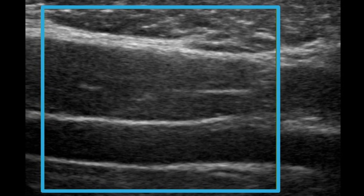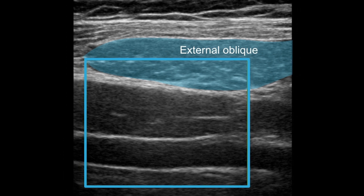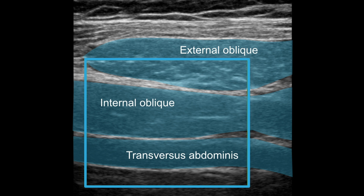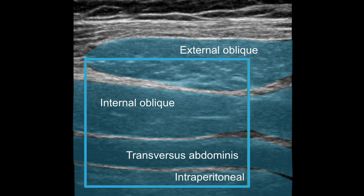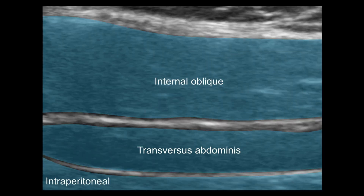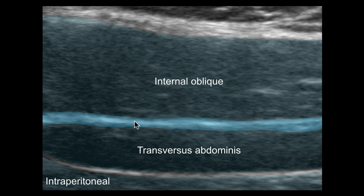Here we are zoomed in. Notice again the three muscles we just identified: one, two, three — external oblique, internal oblique, and then what we're looking for, the transversus abdominis muscle. The peritoneal space is just deep to that. Zoomed in further, we see the three muscle bellies and the peritoneal space deep to them. We don't need to go further than that — the only spot our needle needs to go is just beyond this fascial plane to achieve a successful TAP block.